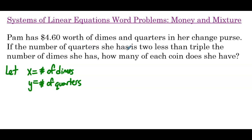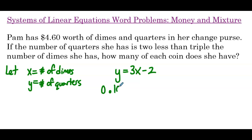The number of quarters she has is 2 less than triple the number of dimes, so that means y, which is the number of quarters, equals triple the number of dimes — that's 3x — and 2 less than that is minus 2. Then we know there's $4.60 worth of dimes and quarters, so each dime is 10 cents, each quarter is 25 cents, and that totals $4.60.